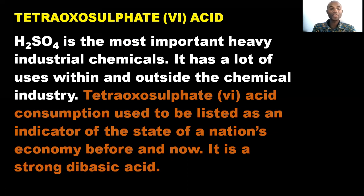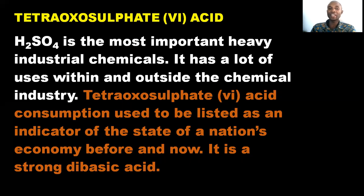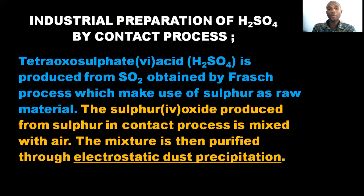Tetraoxosulphate-VI acid consumption used to be listed as the indicator of the state of a nation's economy, and it still is. It is a strong dibasic acid — it contains two hydrogen atoms in the molecule. How can we prepare it industrially? It is prepared through what we call the contact process.